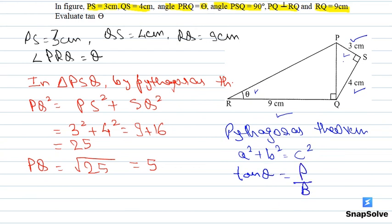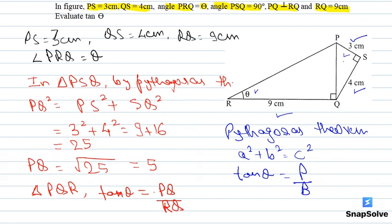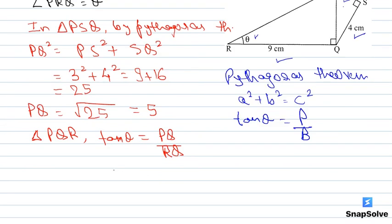Now, tan theta in a right triangle equals perpendicular divided by base. In triangle PRQ, tan theta = PQ / RQ. Substituting the values, tan theta = 5/9. So this is the answer to the question. Thank you very much.